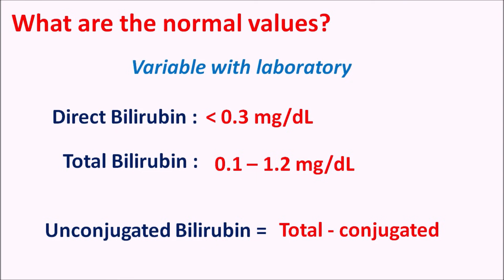In the bilirubin test, the diazotized reagent — sulfanilic acid plus NaNO2 plus HCl — reacts with bilirubin to produce azo bilirubin with purple color. The serum sample alone gives estimation of direct bilirubin, but when mixed with solvents such as caffeine, benzoate, and acetate, it gives total bilirubin levels. In this way, we can estimate direct, indirect, and total bilirubin levels present in the serum.